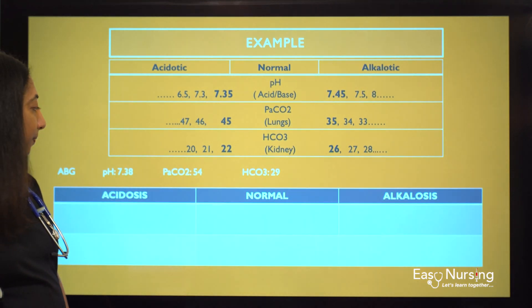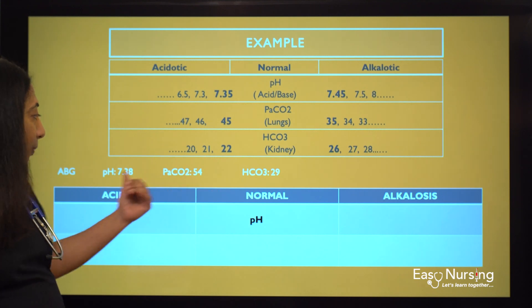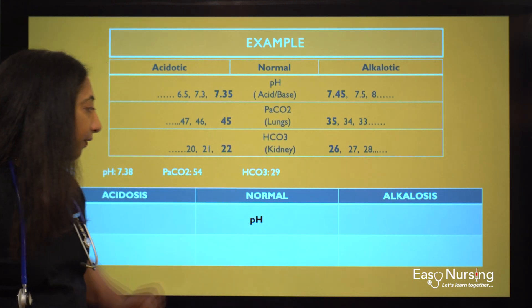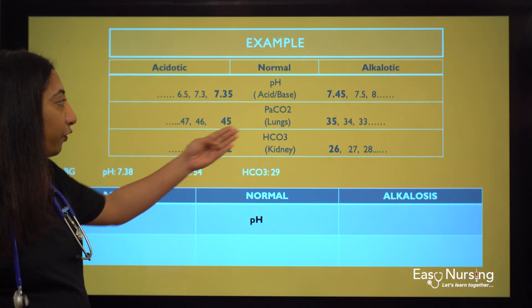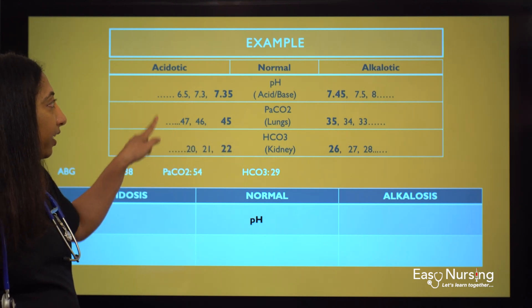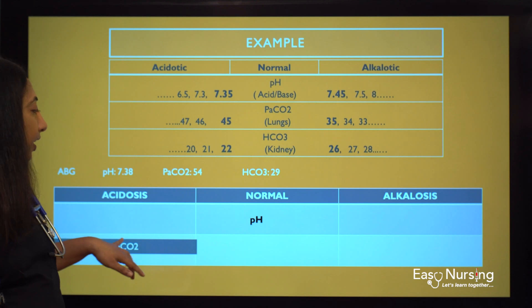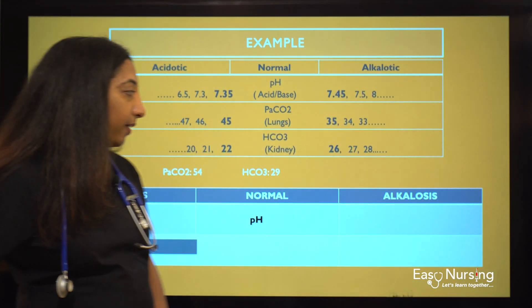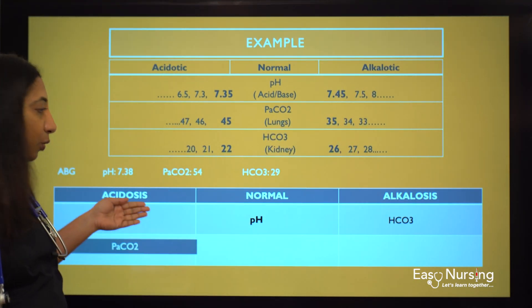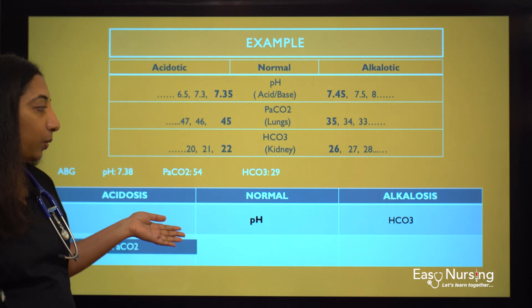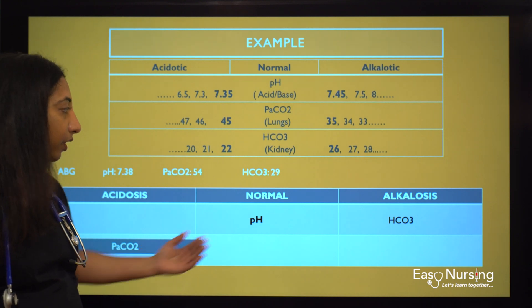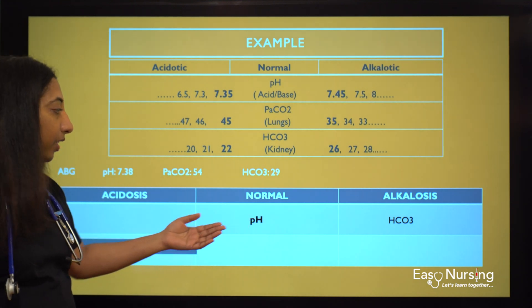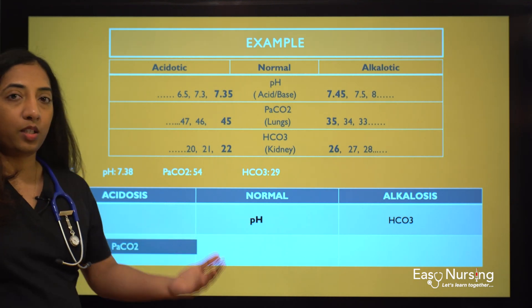Third example: pH is 7.38, which is normal — between 7.35 and 7.45. PaCO2 is 54, which comes under acidotic. Bicarb is 29, so it is alkalotic. We don't have two values together in the same column, which means we know these two are abnormal and the pH is normal — it is compensating and it worked. But we don't yet know if the original problem was acidosis or alkalosis.